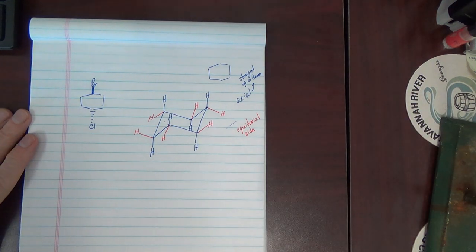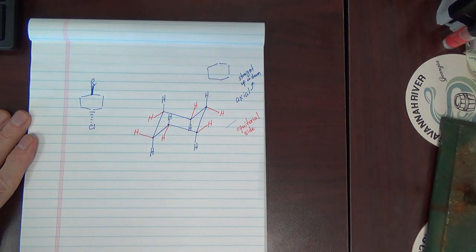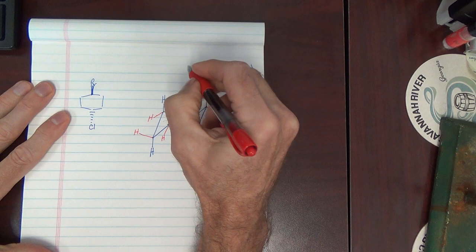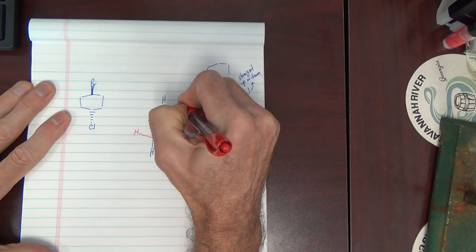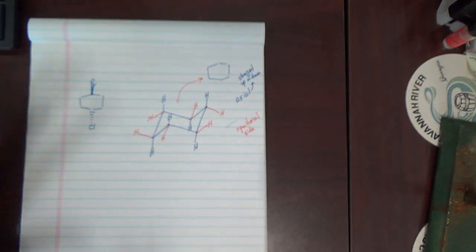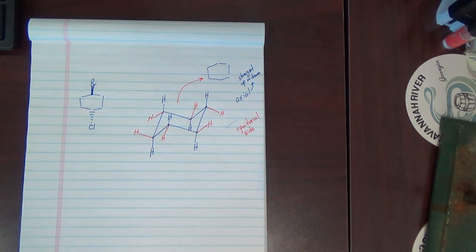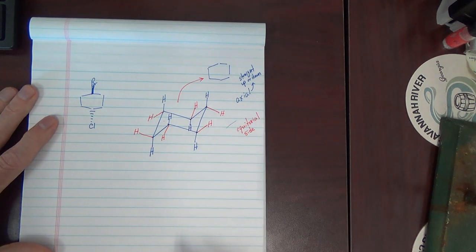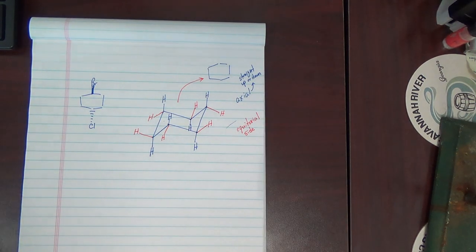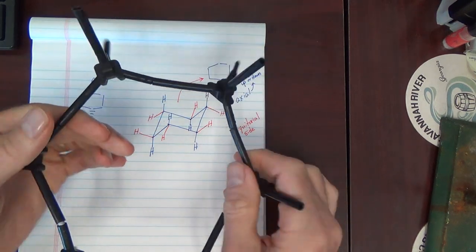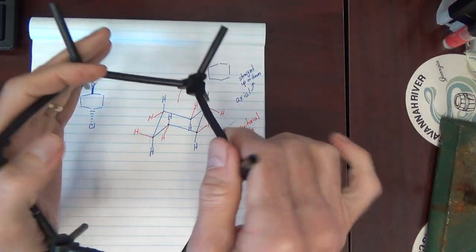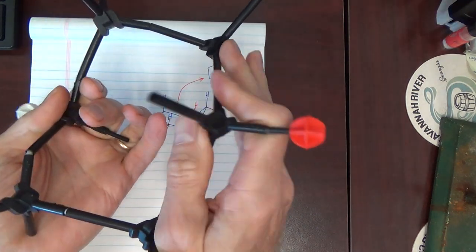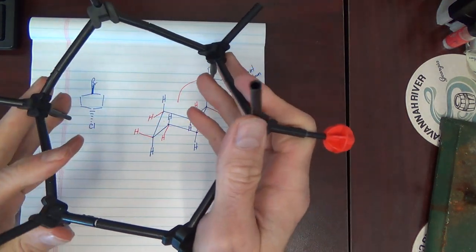That's actually a good-looking chair conformation showing all the H's — of course this is just cyclohexane. Now before we move on, importantly we need to look at what's called a ring flip. When we form the chair we moved one end up and one end down, but we can also go the other way — the other end up, the other end down. That's called a ring flip conformation.